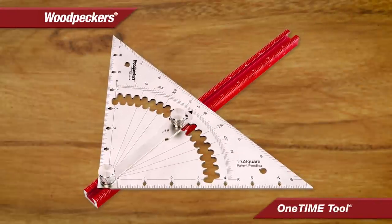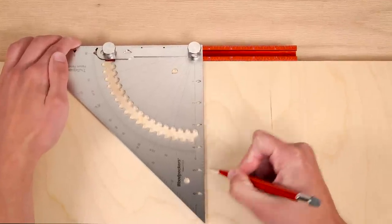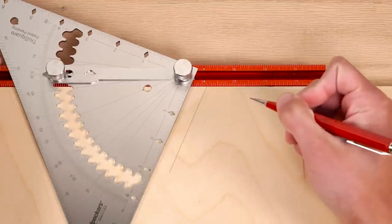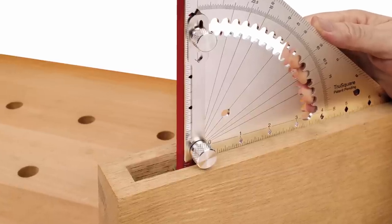The True Square is unlike any tool you've seen. It's a combination square, a speed square, bevel gauge, depth and height gauge, and more.